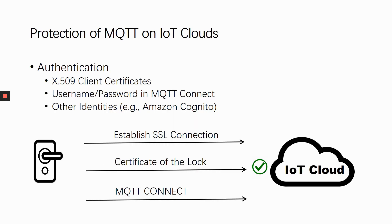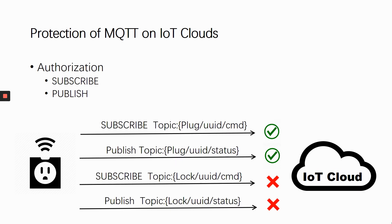To protect communication involving sensitive IoT devices, an IoT cloud often has its custom security mechanism. For example, in AWS IoT, when the MQTT connection goes through TLS, the cloud checks the certificate of the client. Only authenticated clients can start an MQTT session. The IoT cloud platform aims to ensure that each user can only send commands to and receive messages from the devices they are allowed to use. For example, a plug can only access its own topic but cannot publish messages to the topic of a lock. The cloud will block unauthorized messages from clients.